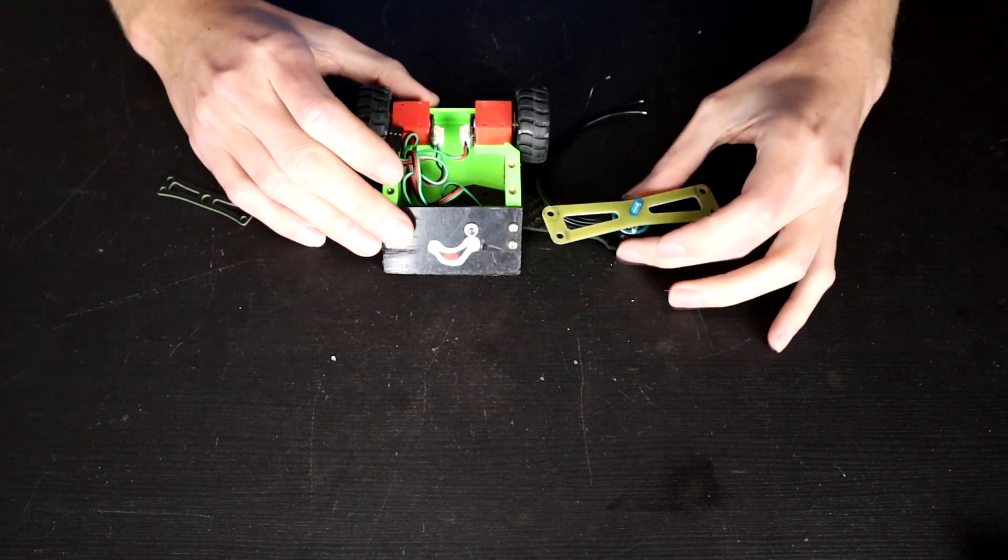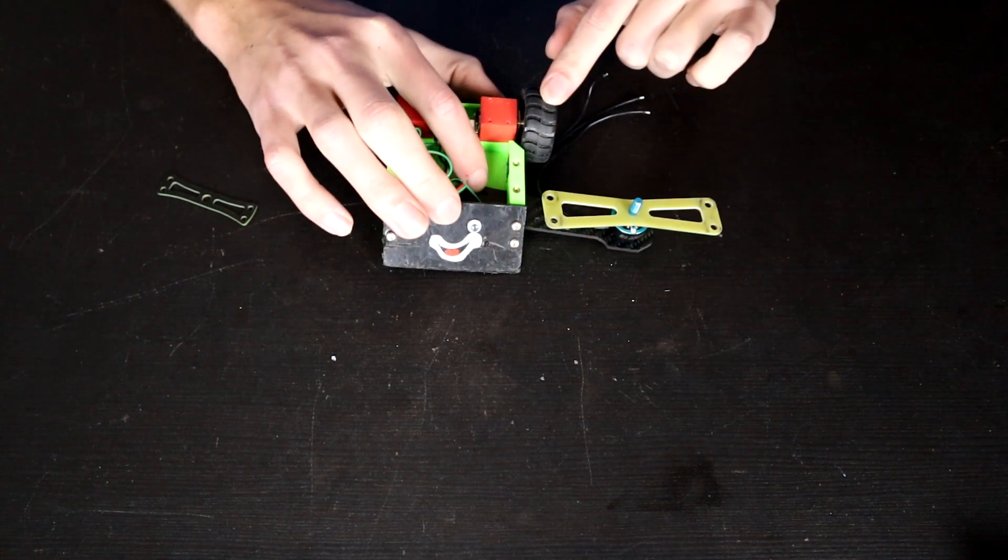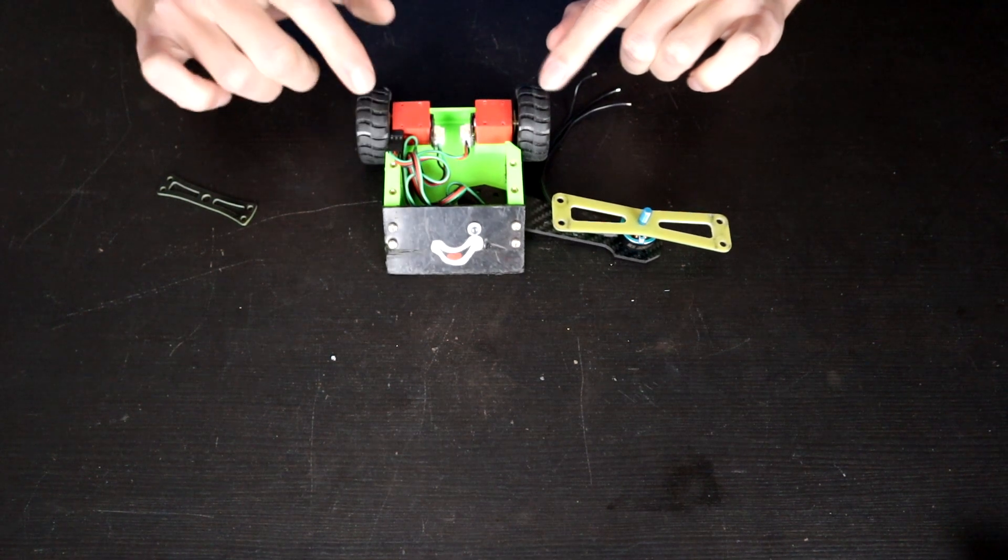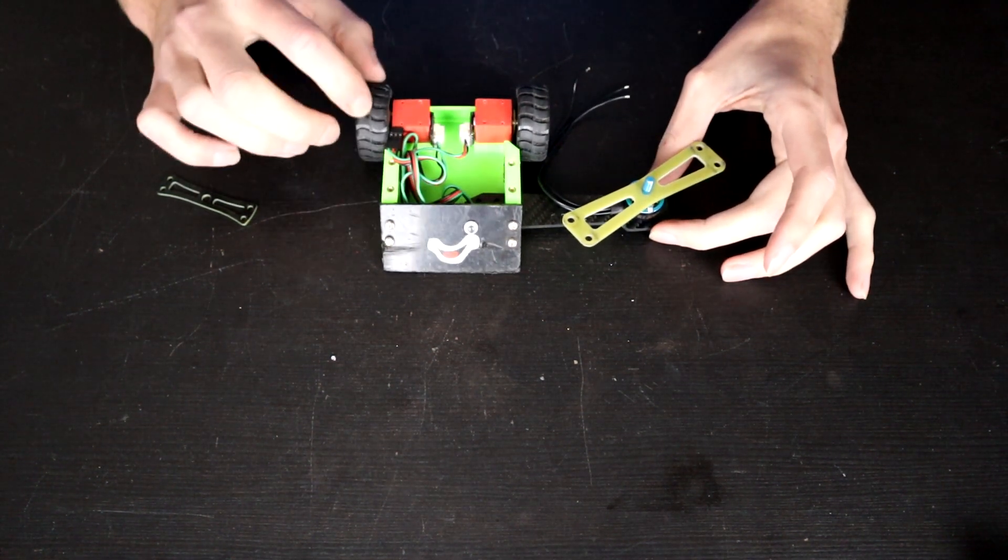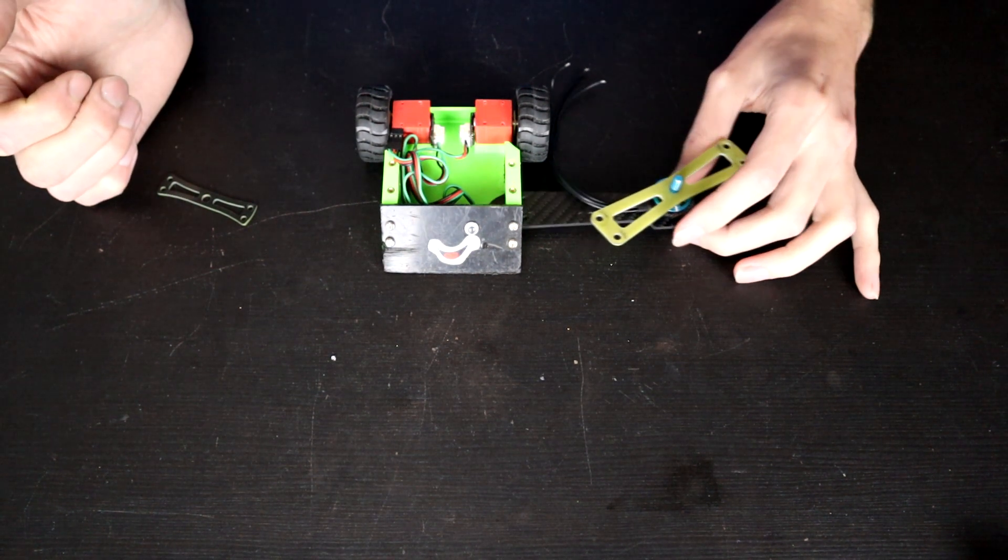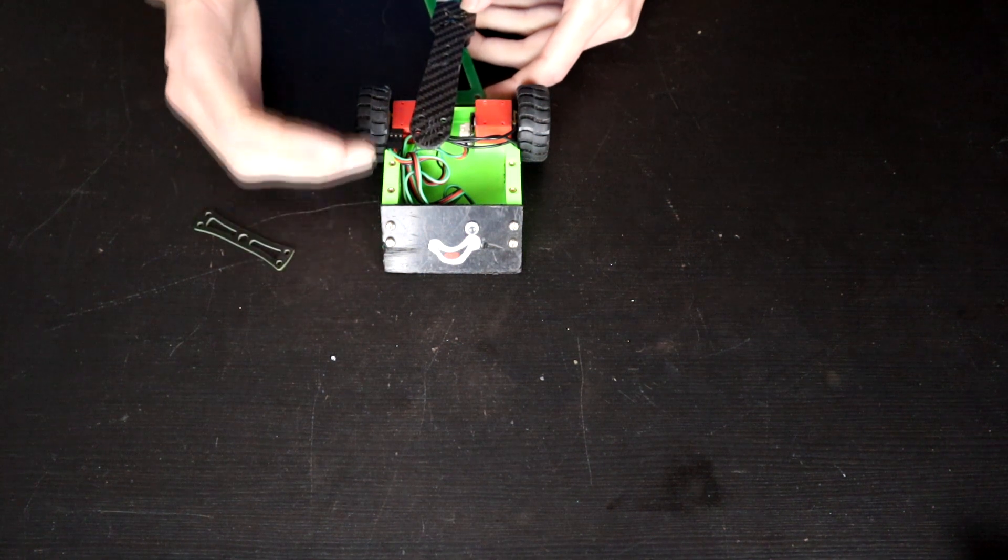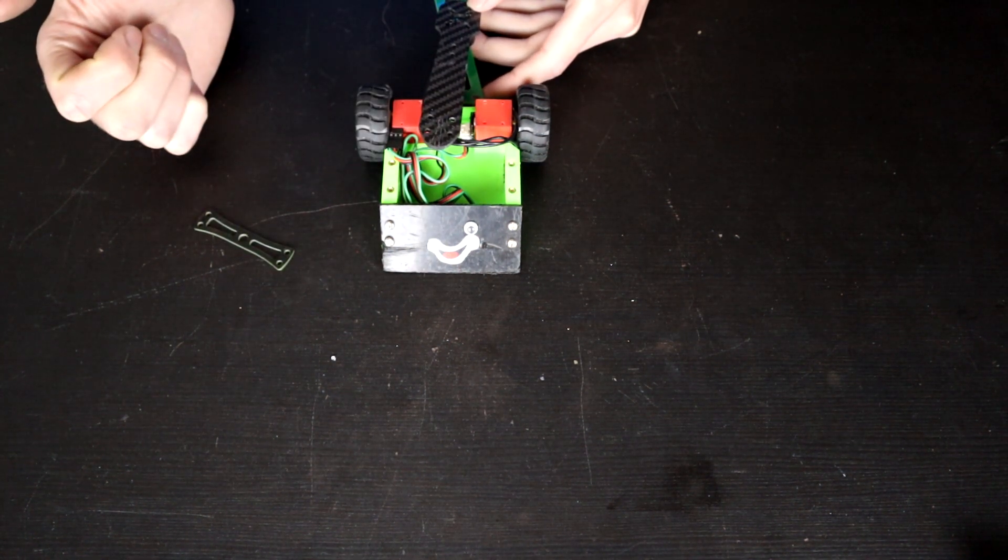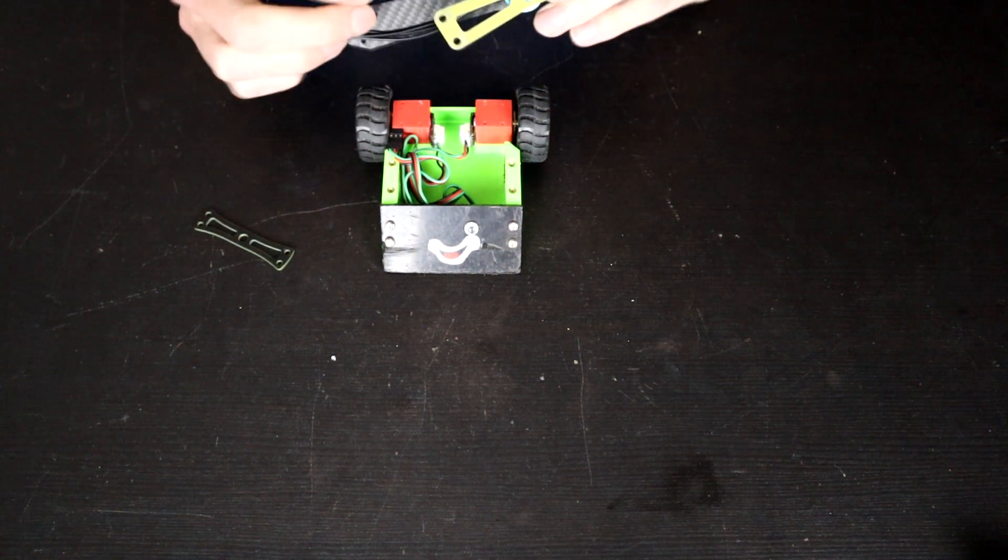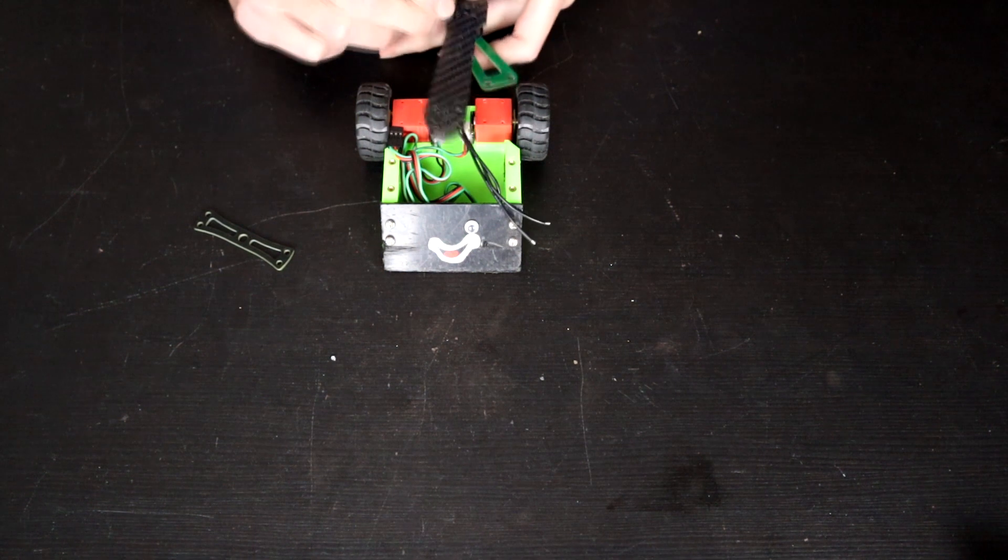Now the problem with this is that it pushes the weapon really far out and I was already having trouble with one wheel being a little bit off the ground and not really contacting too well. So I thought, well, maybe we put it out the back and shrink everything down a little bit. That could actually work. Yeah, just a fun little idea. I don't think anybody's ever done this before, so we're gonna give this a shot.